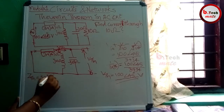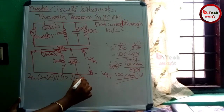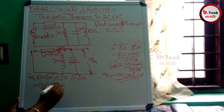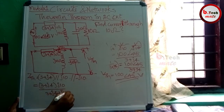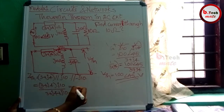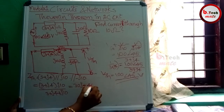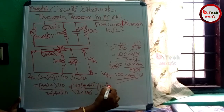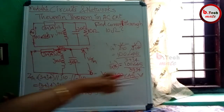3 plus J4 in parallel with J10, then that is in parallel with minus J10. The equation is: (3 plus J4) multiplied by J10, divided by (3 plus J4 plus J10). Then subtract: (30J plus J minus 40) divided by (3 plus 14J). If you know the parallel impedance, it is minus J10.